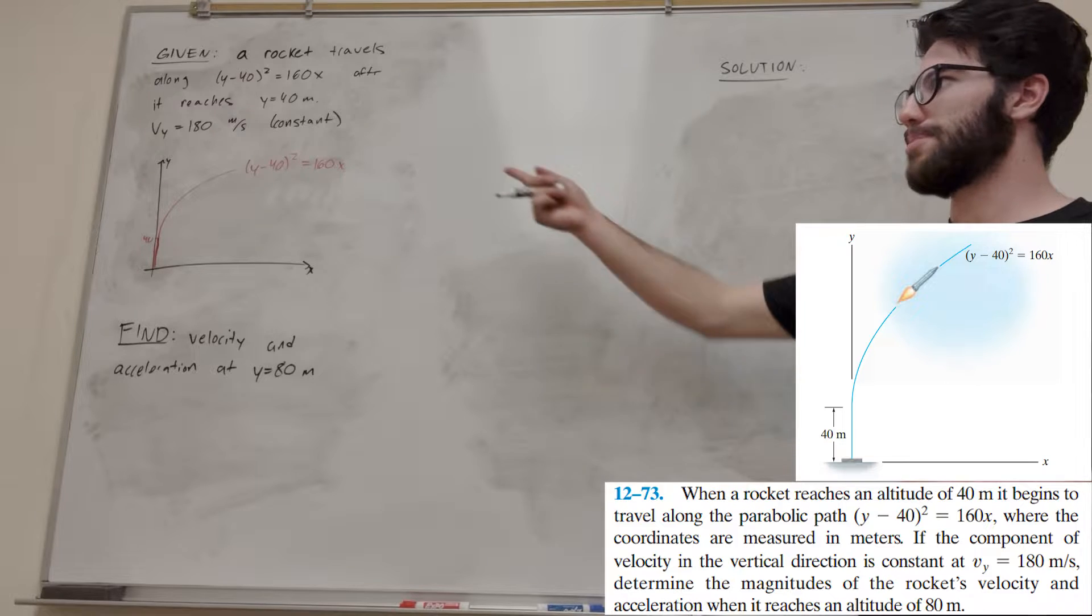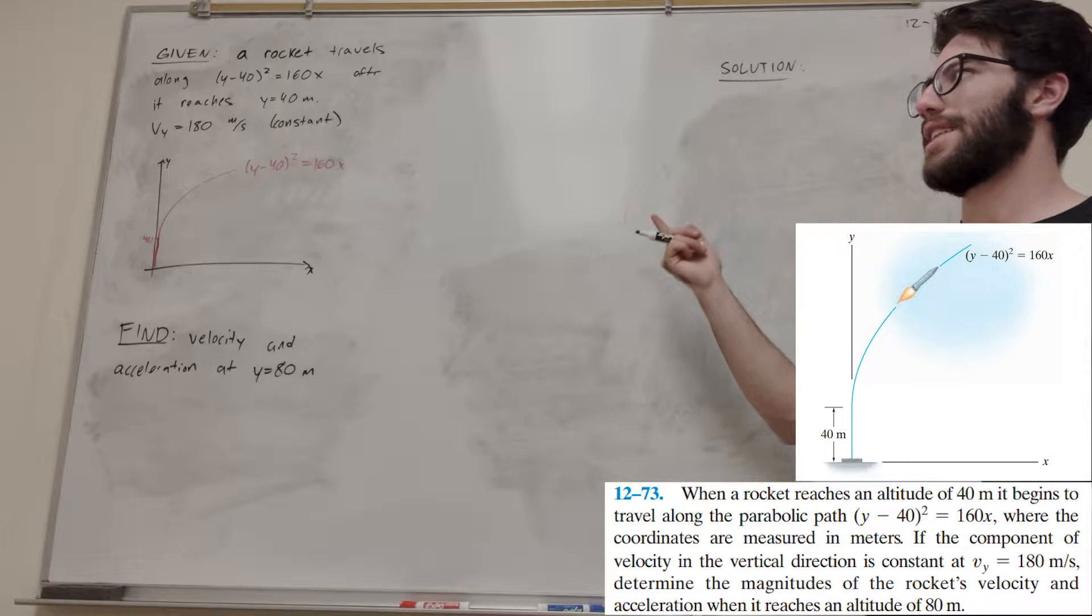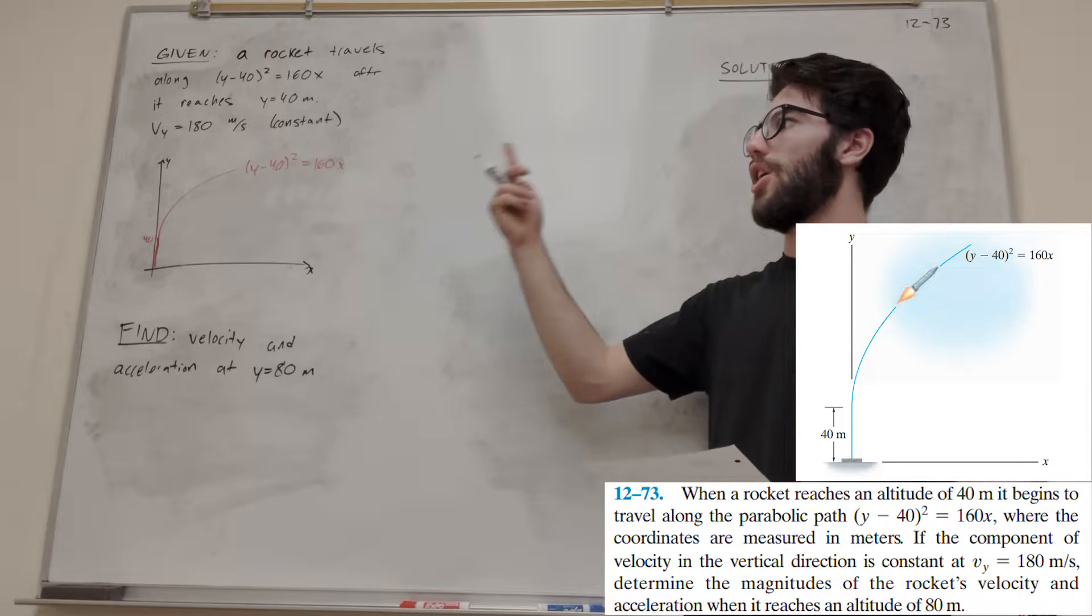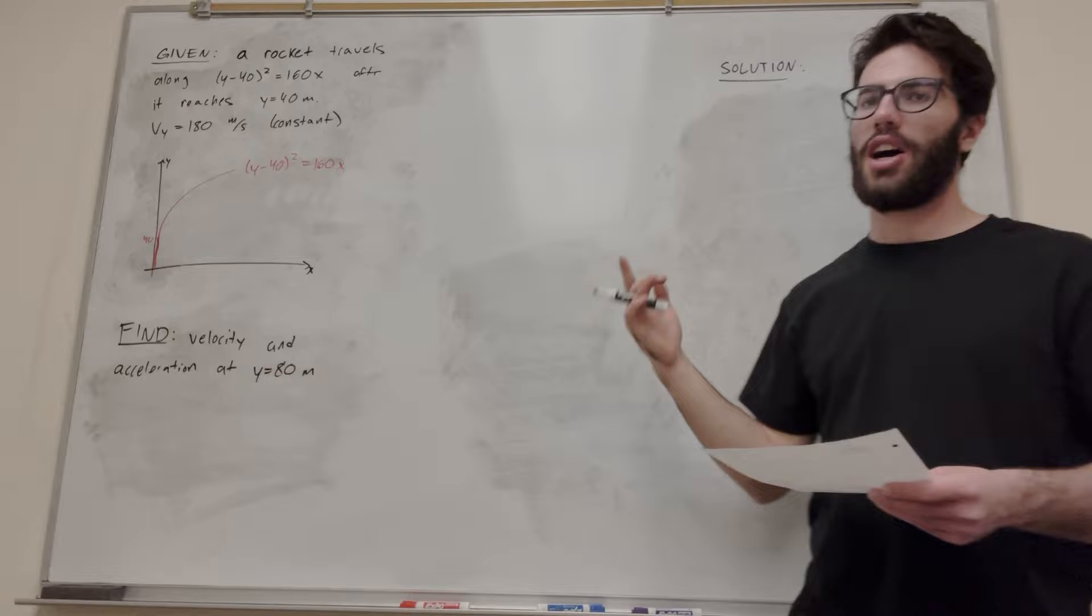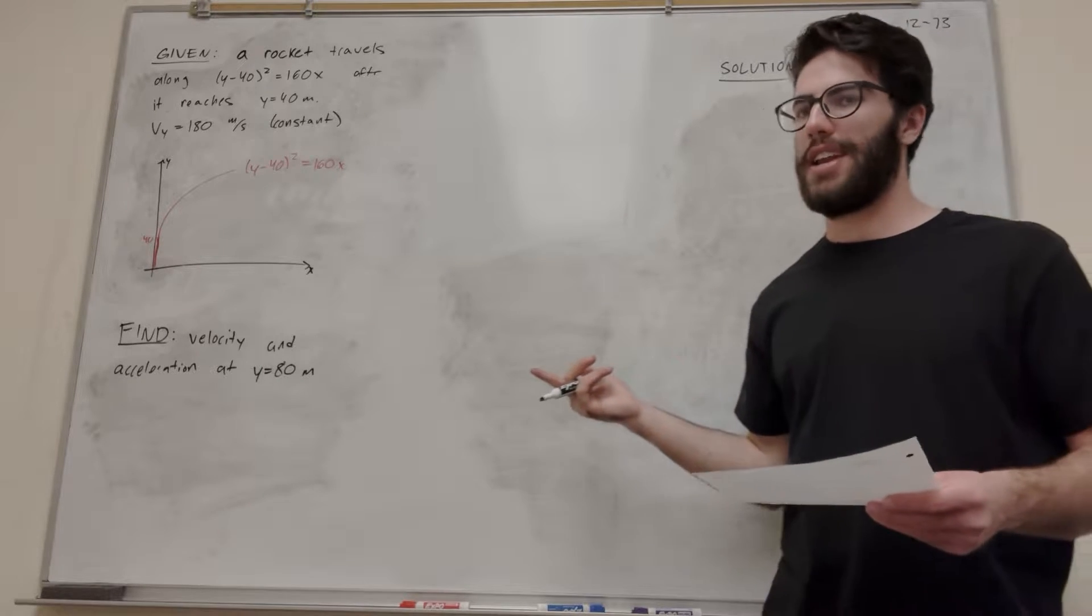We're given a rocket that travels along this parabolic path, and it follows that path after it reaches 40 meters. We're given that its velocity in the y direction is always 180 meters per second. It's constant.